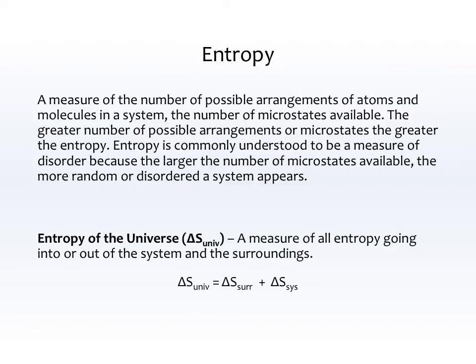Entropy is, technically, a measure of the number of possible arrangements of atoms and molecules in the system, or in other words, the number of microstates available. Microstates is the College Board preferred word — how many different possible arrangements there are of atoms in a molecule. The greater number of possible arrangements, or microstates, the greater the entropy.